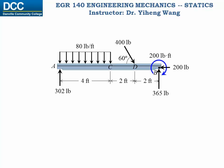Then we want to set up an x-axis to represent the different locations along this member. You can set it up whichever way you want — from left to right, from right to left, from the center, or even setting up multiple x-axes. But I always set it up from left to right, and for one particular problem I always only use one x-axis. On this axis, point A is the origin where x equals 0, and point B is the point where x equals 8. Any point between A and B can be represented by various x values on this axis.